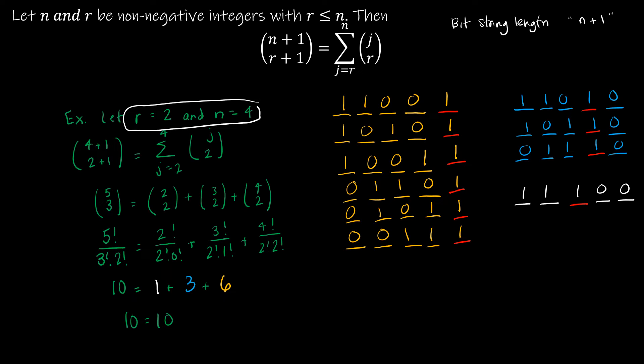So we're going to look at an example where n is 4 and therefore n plus 1 is 5. And I'm going to have r plus 1 ones.